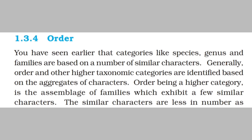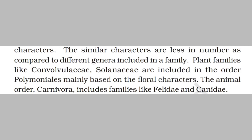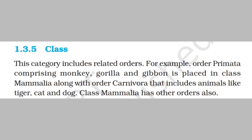The next higher rank is Order. Categories like species, genus, and families are based on a number of similar characters. Order and other higher taxonomic categories are identified based on aggregates of characters. Order, being a higher category, is the assemblage of families which exhibit a few similar characters — fewer in number compared to genera in the family. Plant families like Convolvulaceae and Solanaceae are included in order Polymoniales based on floral characters, whereas in animals, order Carnivora includes families like Felidae and Canidae. So cats and dogs, though in different families, are placed in the same order.